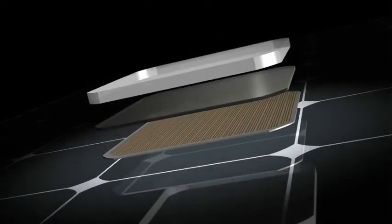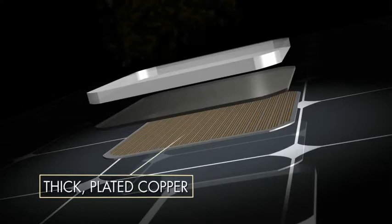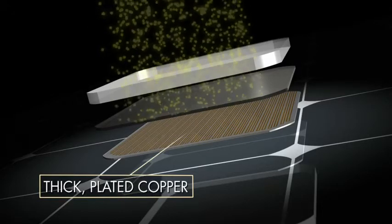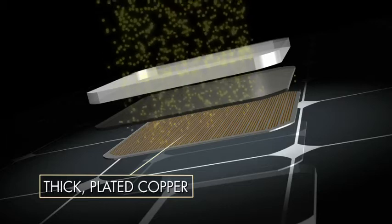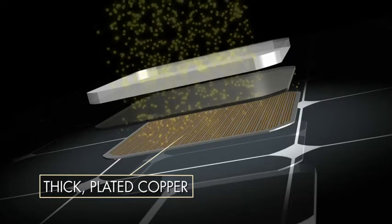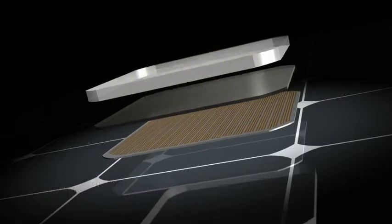SunPower cells are constructed on a solid copper foundation, allowing them to handle more power, as well as making them practically immune to the cracking and corrosion that causes standard solar cells to steadily lose power over time.